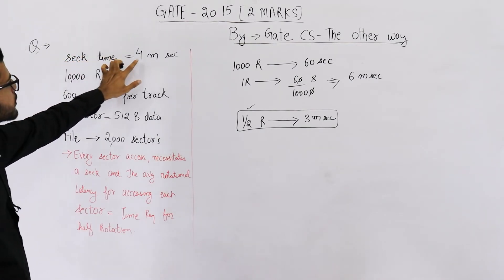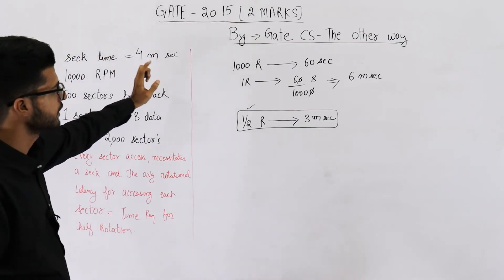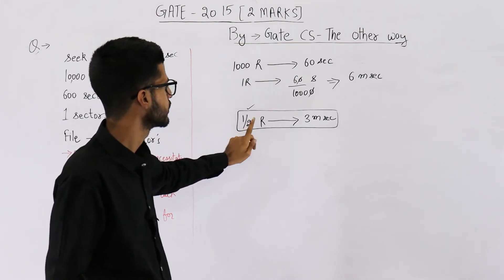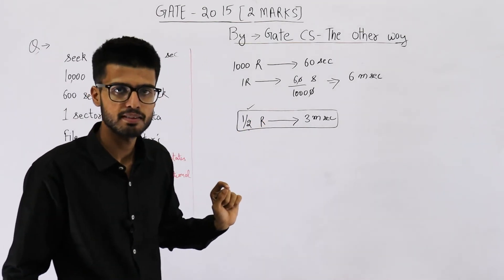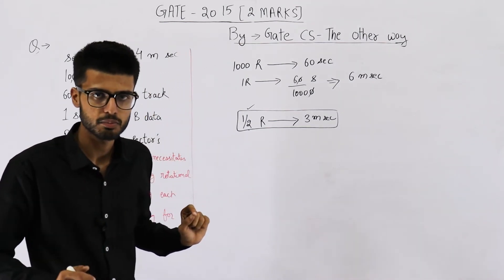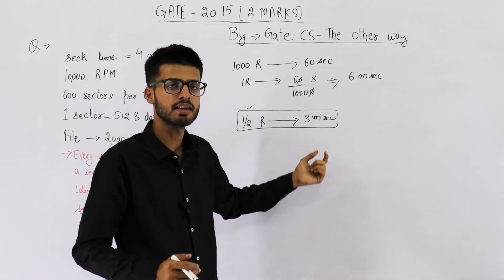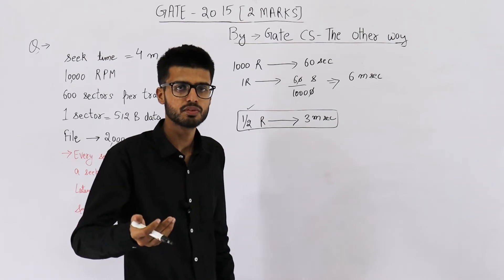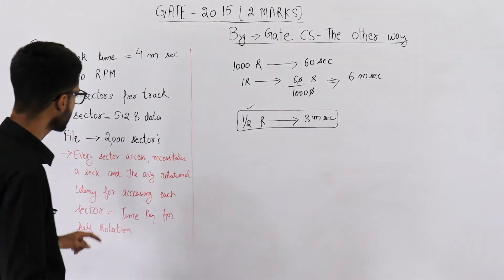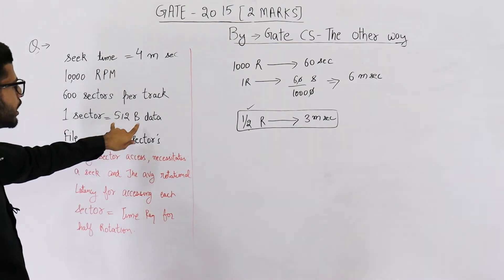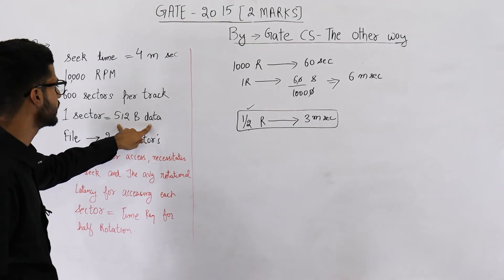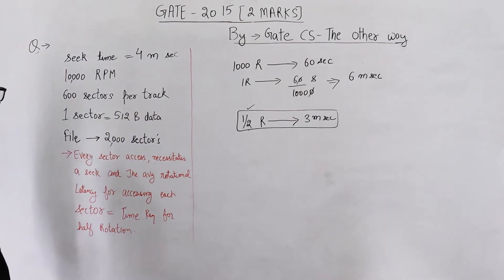Seek time is given as 4 milliseconds. We calculated rotational delay as 3 milliseconds. That means a total of 7 milliseconds is spent in adjustments. After 7 milliseconds, you'll start transferring the sector. So let's see how much time is required for transferring data. How much time do we actually need for accessing these 512 bytes present on a sector?